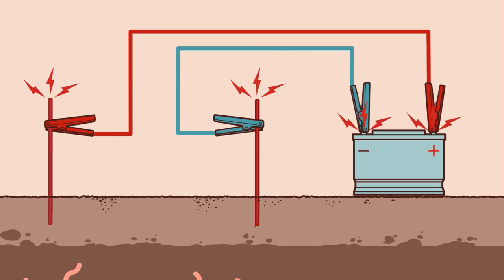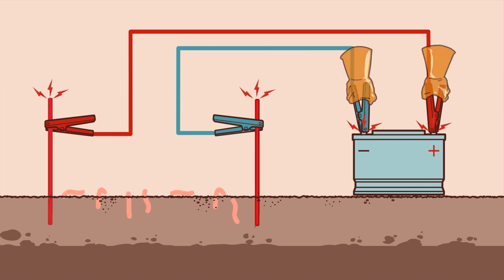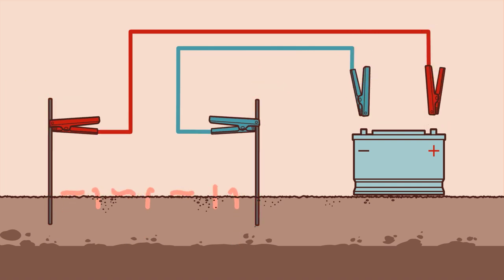The worm jackpot arrives fast, so be ready. Once you see the worms surfacing, disconnect the cables from the battery and then from the rods.